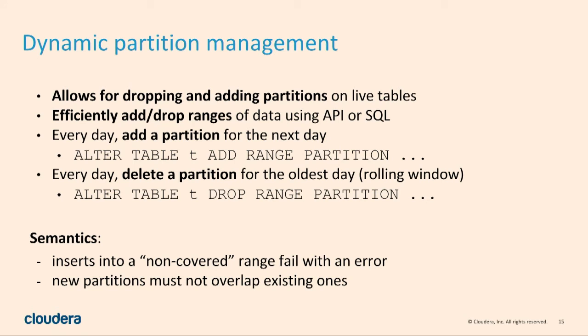If you have an application where you only need to keep one year of data, you can create a range partition for each day. Then every day, you drop the partition from 365 days ago — that's an incredibly efficient metadata operation and it happens in a second or two. This is a very powerful thing for time series use cases that you don't see in some other NoSQL applications. When you create a range partition, if you try to insert data from the year 2040 and that partition doesn't exist, Kudu gives you an error. This is good from a data cleanliness perspective.